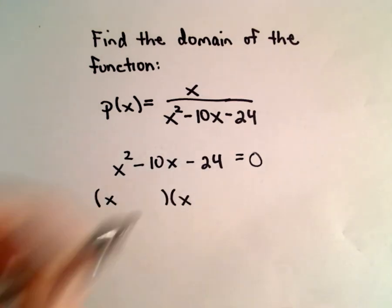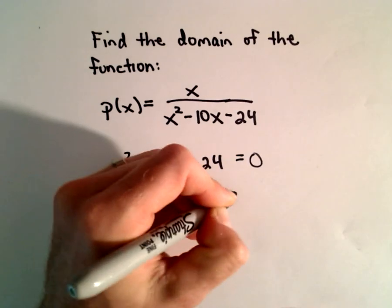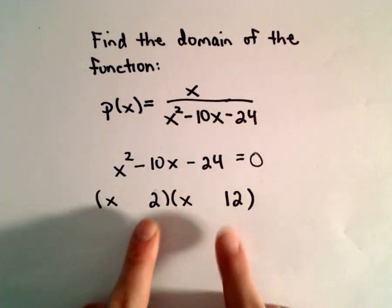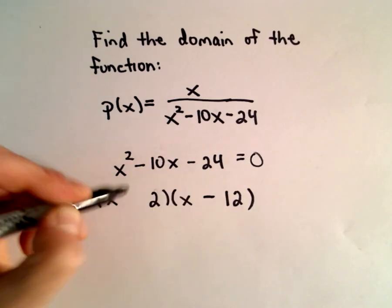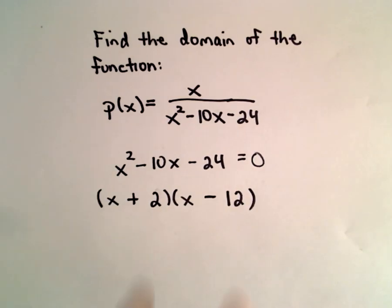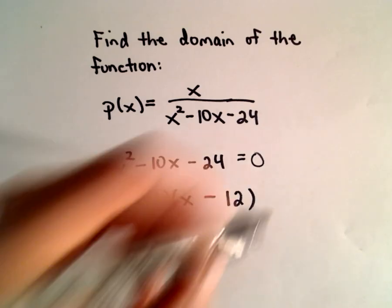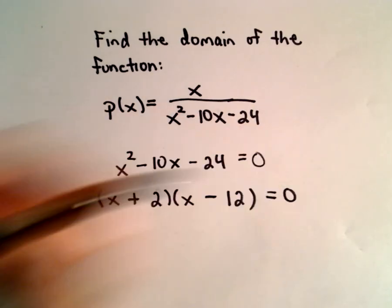I think some combination of 2 and 12, right, that's going to multiply to 24. And I think, let's see, if we make the 12 negative and the 2 positive, those two numbers will multiply to negative 24, but add up to negative 10. So that's a correct factorization.